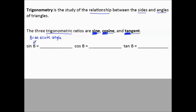So the sine of angle B is represented by the ratio of the opposite side from angle B and the hypotenuse of the right triangle.